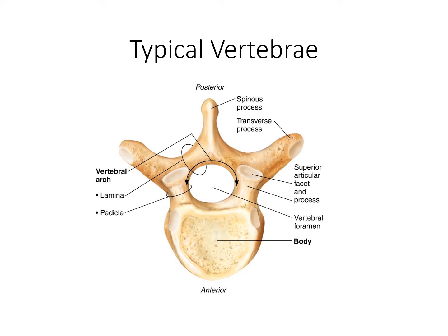Let's look at the bone features of a typical vertebra. This large, flat portion of the vertebra, which makes up most of its bulk, is called the body. The body is the load-bearing portion of the vertebra — most of the weight is borne by the body.